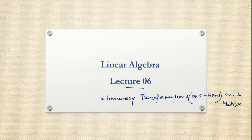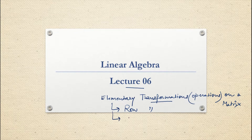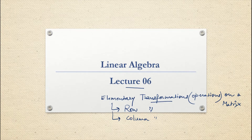These elementary transformations come under two types: elementary row transformation and elementary column transformation. For a matrix, we can perform transformations based on an entire row, and we can perform elementary transformations based on an entire column of a matrix.